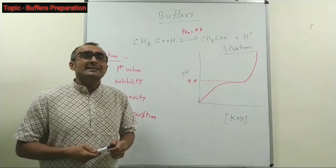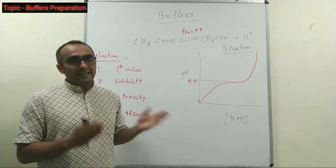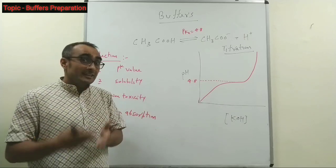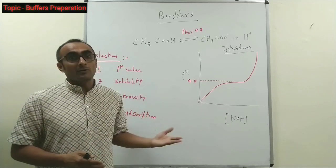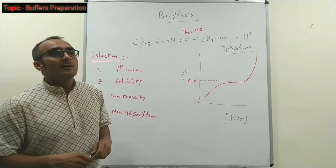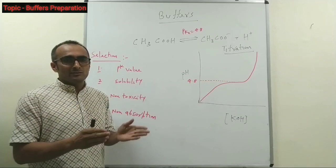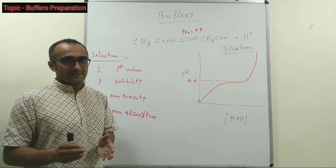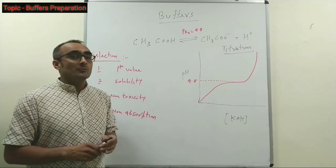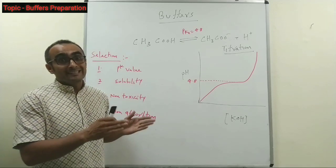Buffers are basically a mixture of a weak acid and its conjugate salt, or a weak base and its conjugate salt. Why weak acid and weak base? Because all biological reactions require a pH generally between 3 to 10, and it is only weak acids or weak bases which can function as a buffer within this range.